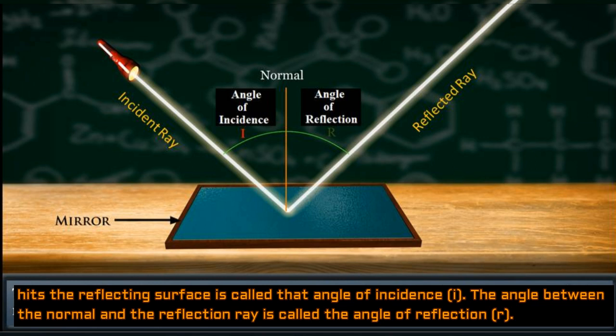The angle between the normal and the reflection ray is called the angle of reflection (R).